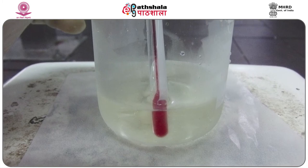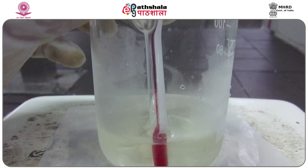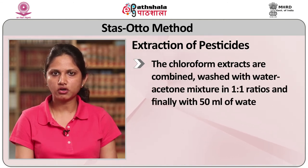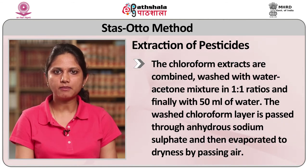In the second method, 50 grams of macerated tissues or biological materials are mixed with an equal amount of anhydrous sodium sulfate and 100 ml of acetone in a conical flask, then refluxed on a hot water bath for 1 hour. After cooling, the acetone extract is filtered. The residue is extracted twice with further 50 ml portions of acetone. The combined acetone fractions are concentrated by evaporation to 50 ml for clean-up. The acetone extract is taken into a separating funnel, diluted with 150 ml of water and 20 ml of saturated sodium sulfate solution, extracted thrice with 25 ml portions of chloroform with gentle shaking. The chloroform extracts are combined, washed with a water-acetone mixture in a 1:1 ratio, then with 50 ml of water. The washed chloroform layer is passed through anhydrous sodium sulfate and evaporated to dryness by passing air.